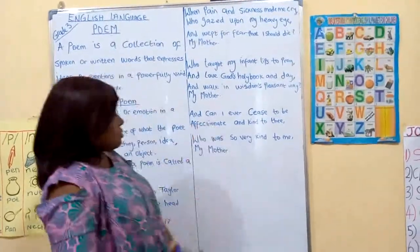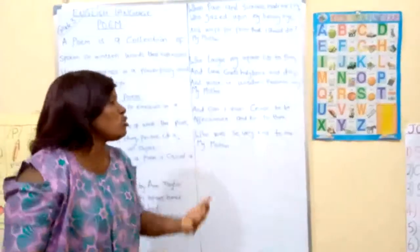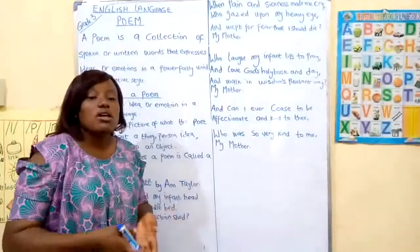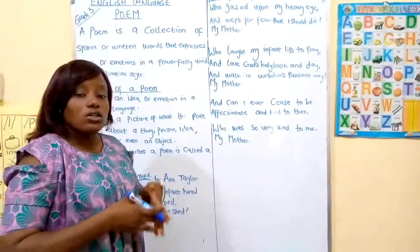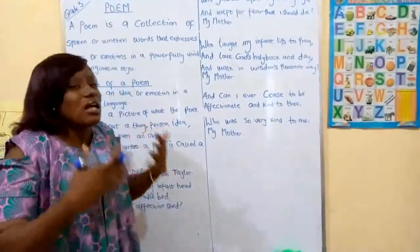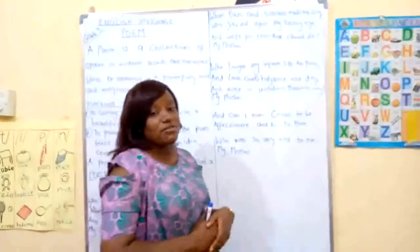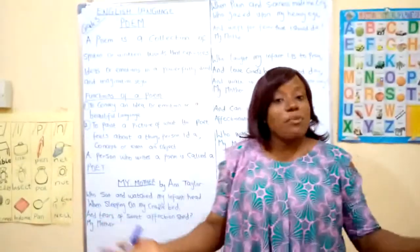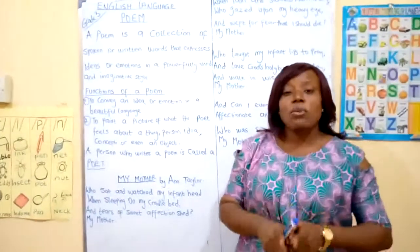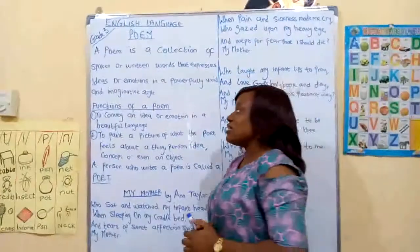In the last stanza, the poet is saying how she can never cease to be kind and affectionate to her mother, because the mother has been through a lot for her as a child while she was growing up. So she asks how she could ever cease to be affectionate and kind to her mother who was very kind to her. You should love your parents. Cherish our parents, especially our mothers.